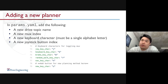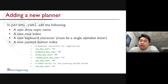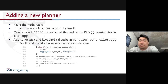Next, we'll go over how to add a new planner. First, you need to add a new drive topic name, a new Mux index, and a new keyboard or joystick button index in the params.yaml file. We've shown here how to toggle the Mux in a few lines of code — these are the parameters you'll need to add for your new planning method. Then you'll need to make the node itself and launch the node in simulator.launch.